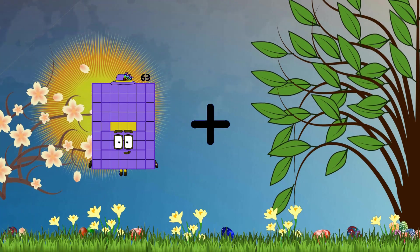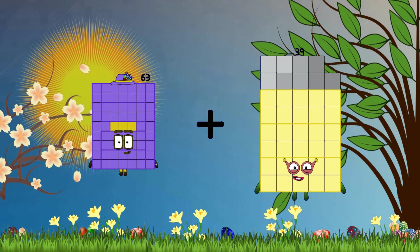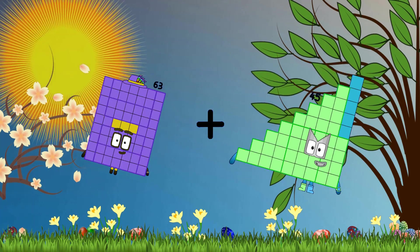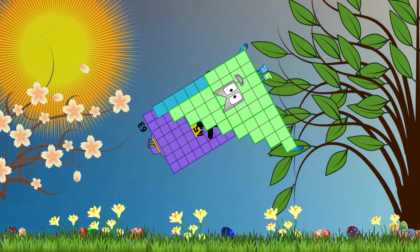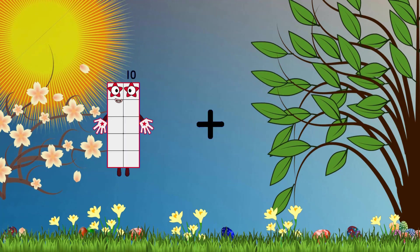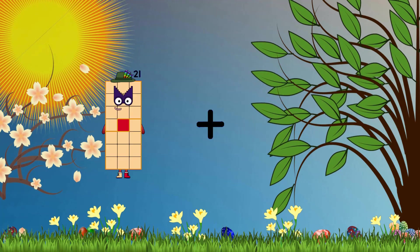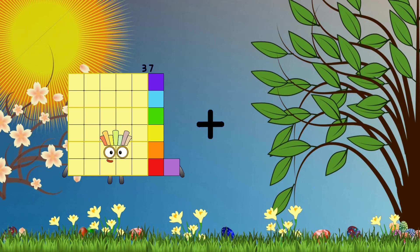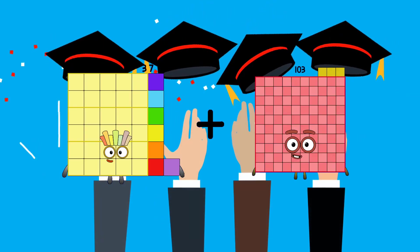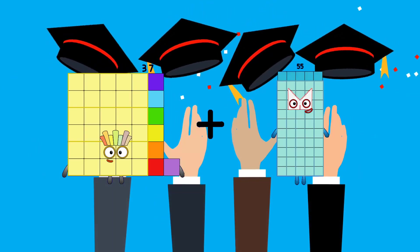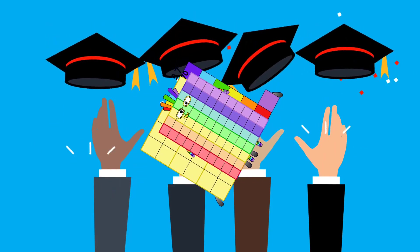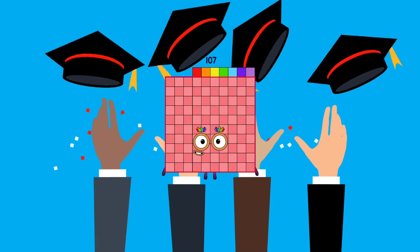63 plus 45 equals 108. 37 plus 70 equals 107.